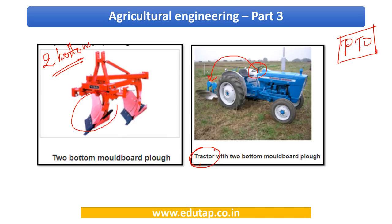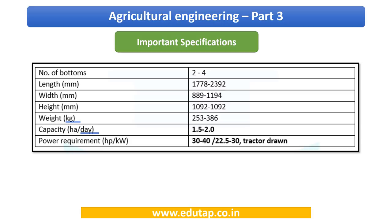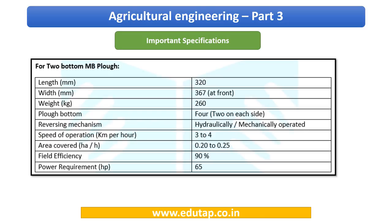Regarding MB plow specifications, the capacity and power requirement are the two most important data points — there are direct questions from these areas. For the two-bottom MB plow specifically, kindly stop the video and memorize these specification values. The previous tabular column covered two to four bottoms, while this one specifically addresses the two-bottom configuration.